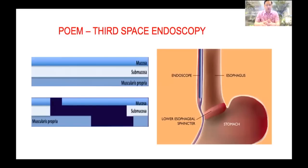In POEM procedure, we should always remember the flap-valve mechanism. The mucosal incision and muscle incision should not be in the same line. After making the mucosal incision, you have to enter the submucosa, expand that space, dissect all the loose areolar fibers to reach the lower esophageal sphincter where the muscle is to be cut.